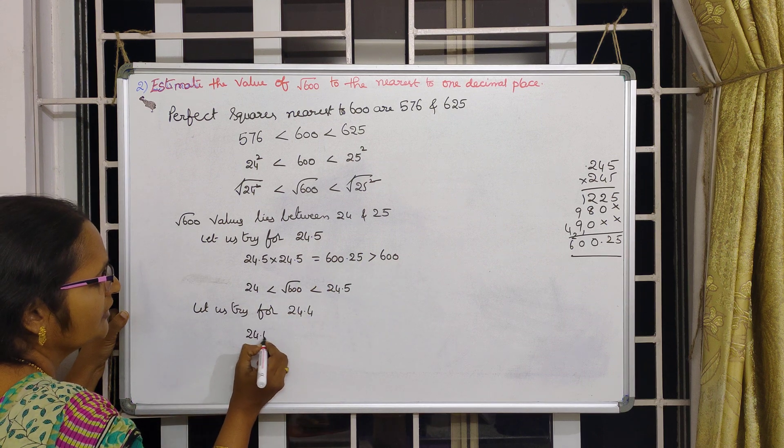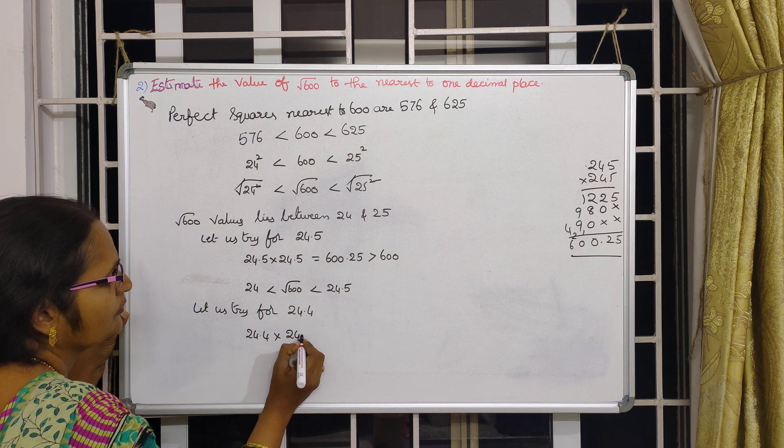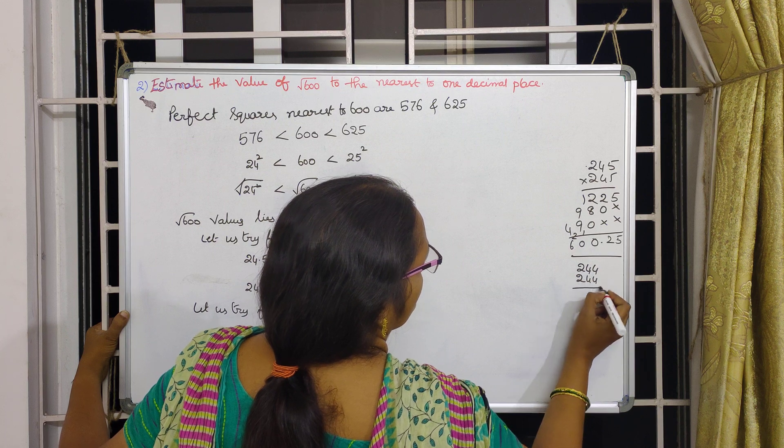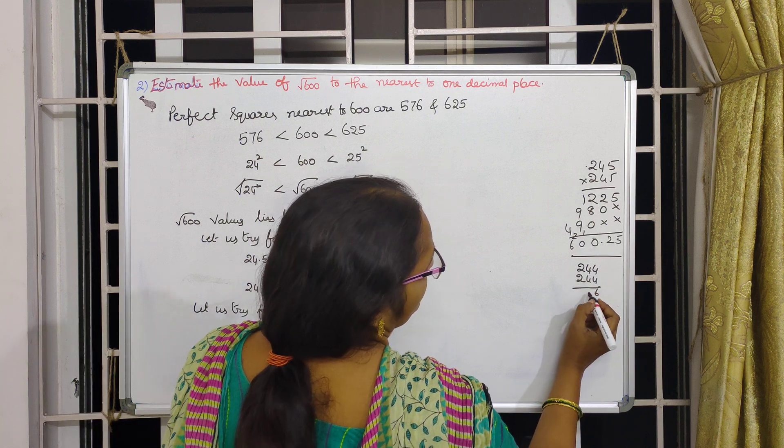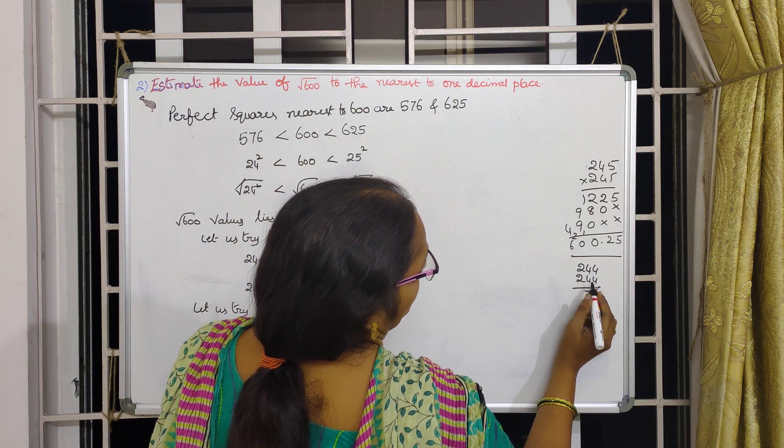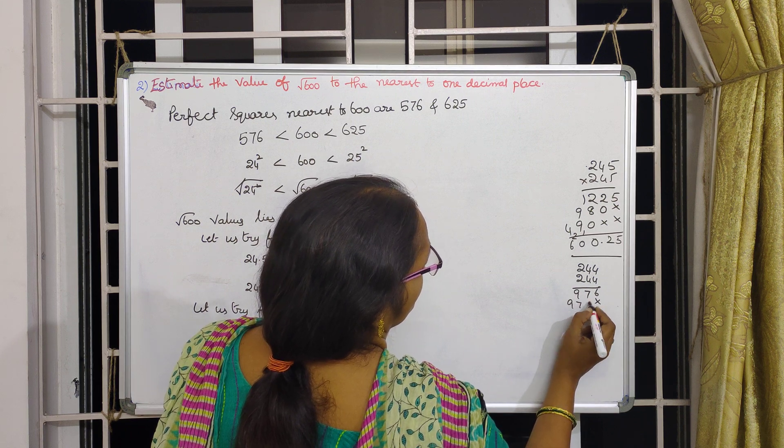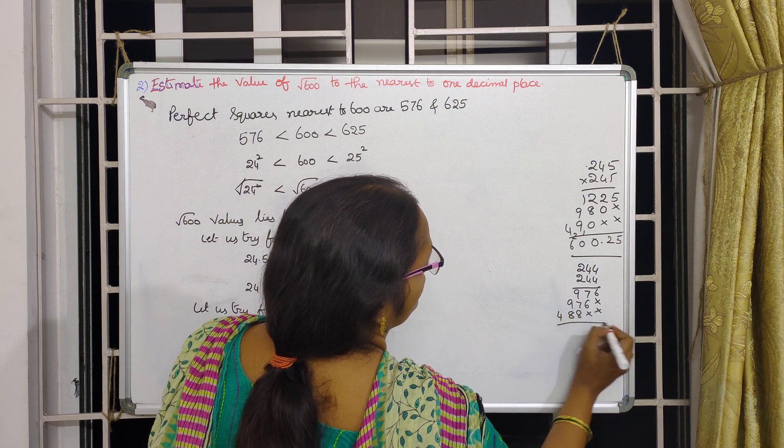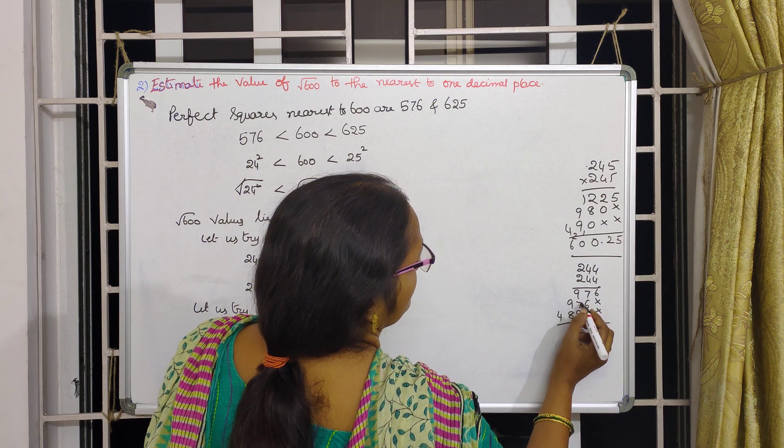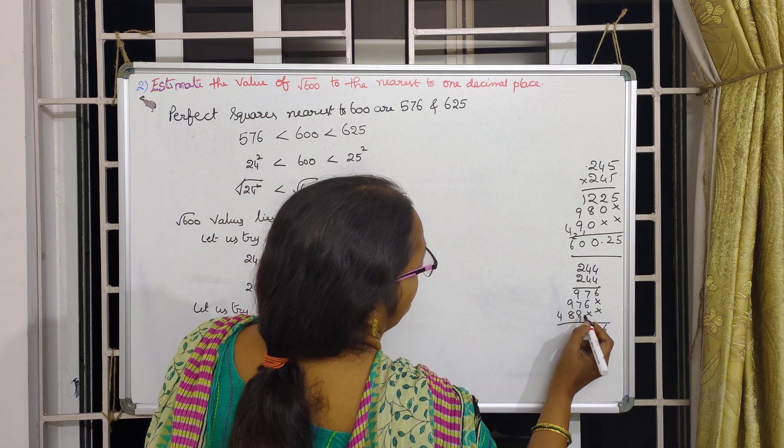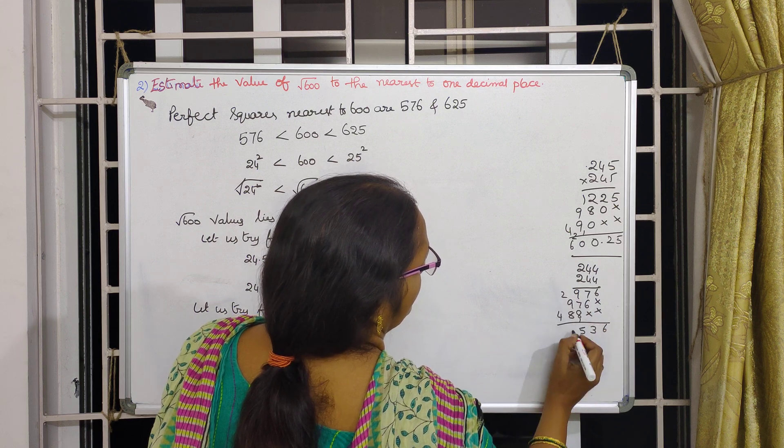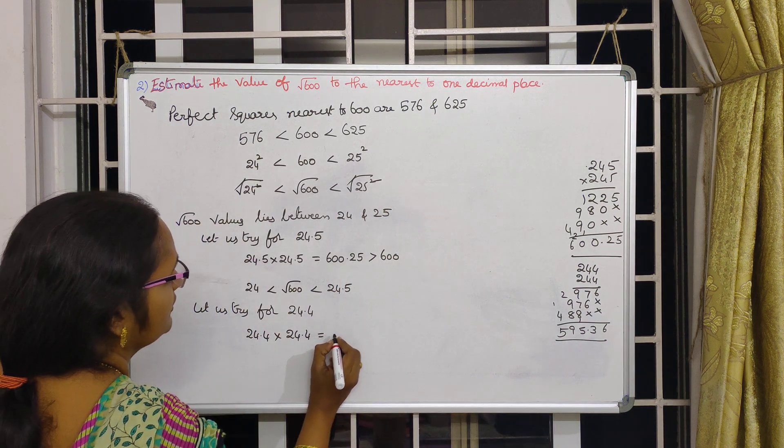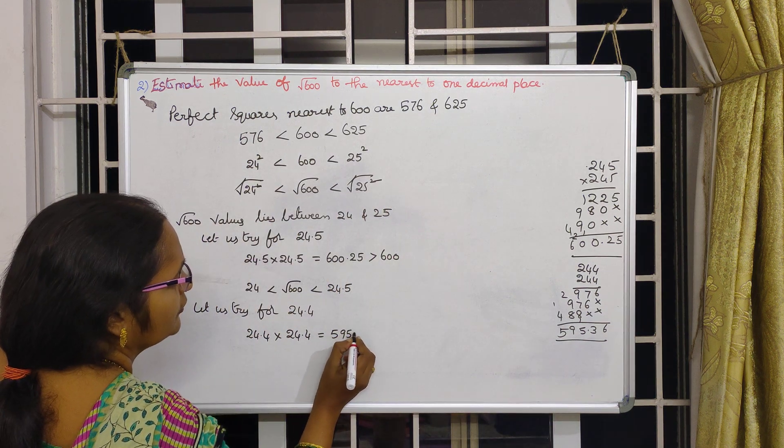Let us see for the next one also. 24.4 times 24.4 I will do. That is 244 times 244. 16, 4 times 4 is 16 plus 1, 17. 8 plus 1, 9. Here also same thing I will get. Now here 2 times 4 is 8, 2 times 4 is 8, 2 times 2 is 4, 6, 13, 9, 10, 17, 8, 25, 10, 19. 595.36. This is equal to 595.36.